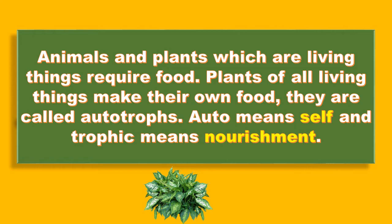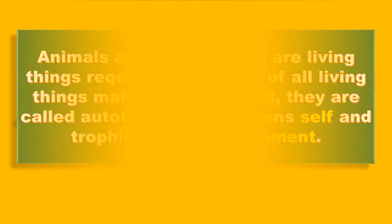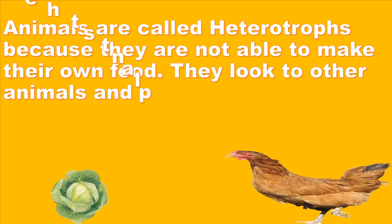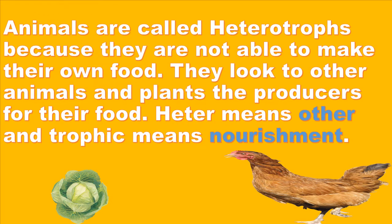Together you get the word autotroph, showing that plants of all living things are able to make their own food. While plants are able to make their own food because they are given that ability, animals are not able to make their own food — so therefore they are called heterotrophs. They have to seek food from other animals and plants, who are the producers. In the word heterotroph, 'hetero' means other and 'troph' means nourishment.